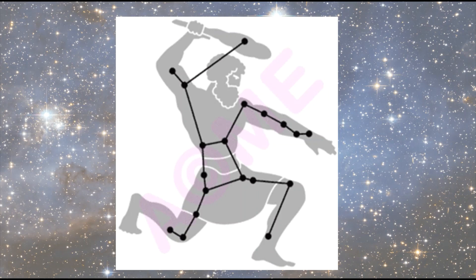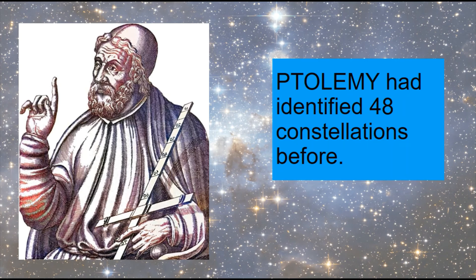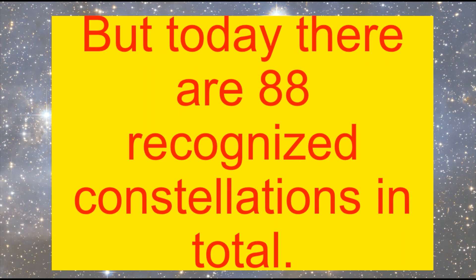I hope you learned something today. If you want to study more, you can open your book or search on Google to look at the 88 constellations. Ptolemy, a very famous astronomer, had identified 48 constellations, but as of today there are 88 total recognized constellations.